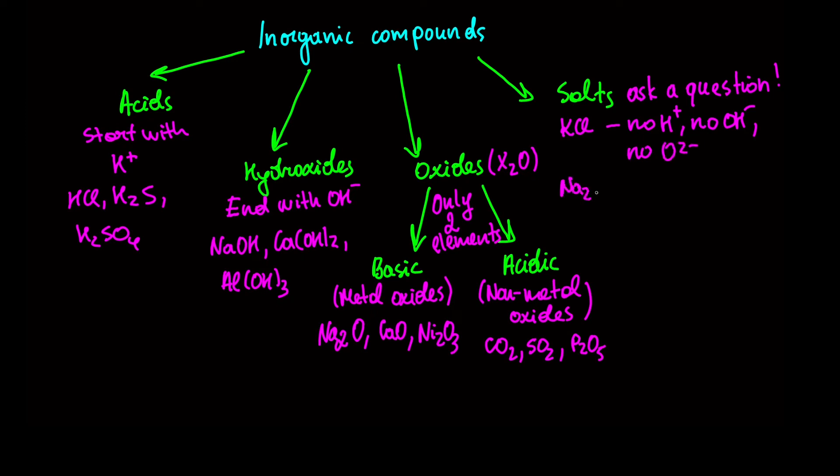Next is Na2SO4. Once again, it can't be acid. No H at the start. And no OH at the end means it's not a hydroxide. It has oxygen, but oxides have only two elements. And there we have three: sodium, sulfur and oxygen. So once again, we are left with salt.